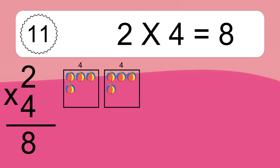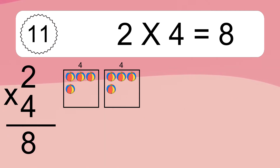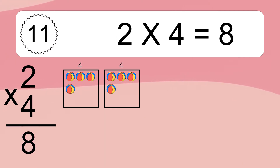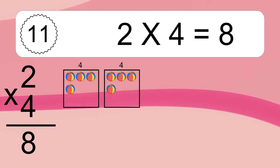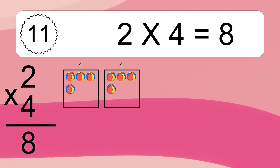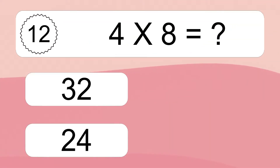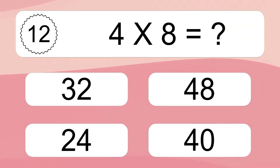2 times 4 equals what? We have 2 boxes and each box has 4 colorful balls inside. If you count all the balls in all the boxes together, you will have 2 times 4 balls. This equals 8 balls.